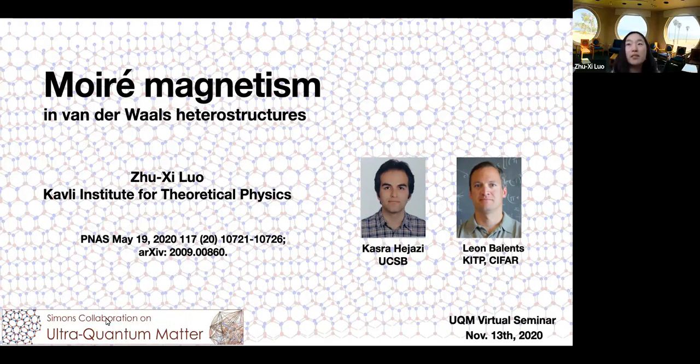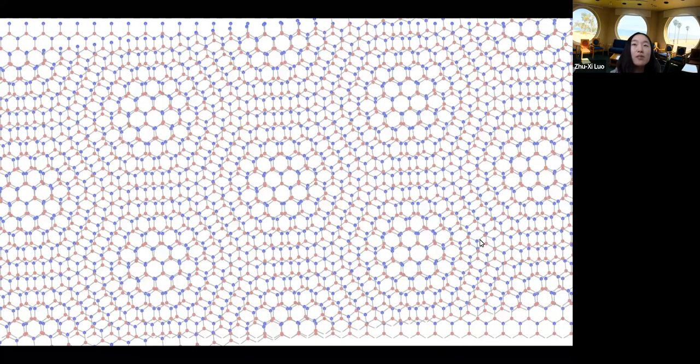So this talk on Moray magnetism is based on the following collaborations with Kazra and Liam. I'll mainly focus on continuum field theory of heterostructures of two-dimensional magnetic materials and their implications. The background of this cover slide shows a very simple example of Moray pattern, where two otherwise identical layers of honeycomb lattice are twisted by a relative angle. One observes that there can be a superlattice structure of triangular shape of this bilayer system.